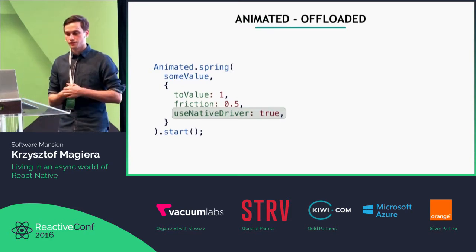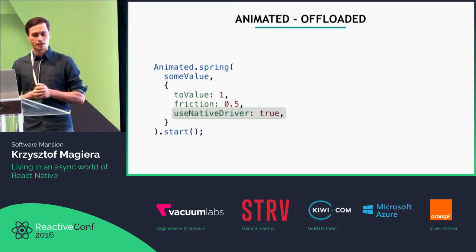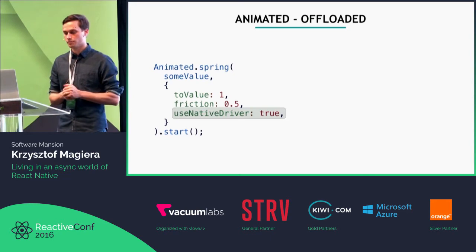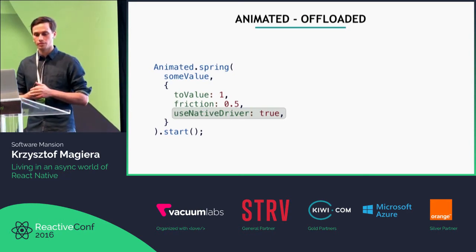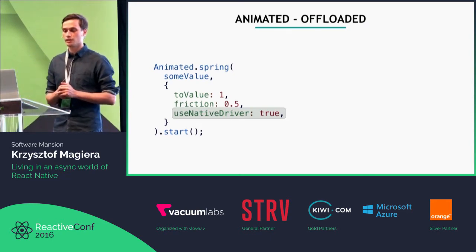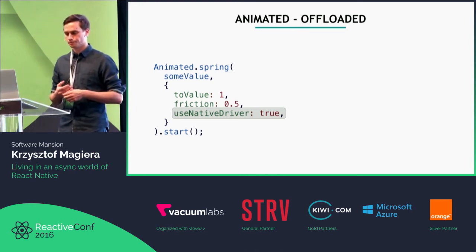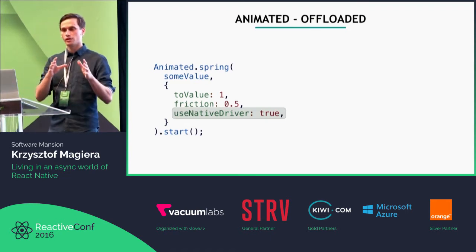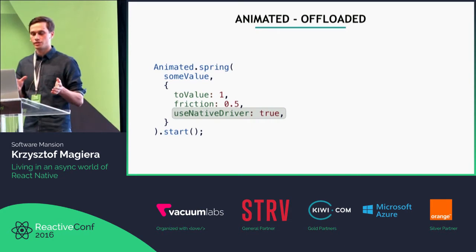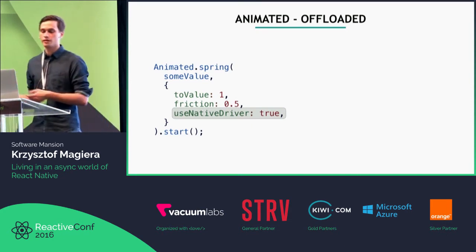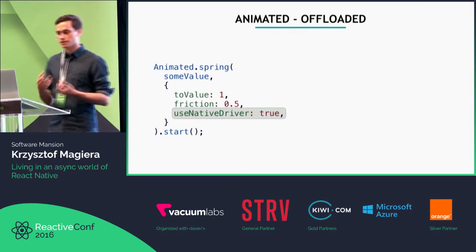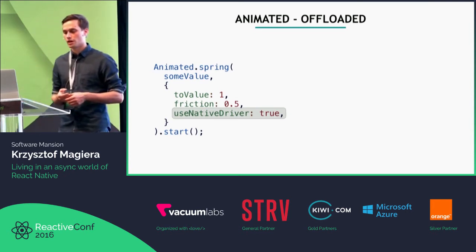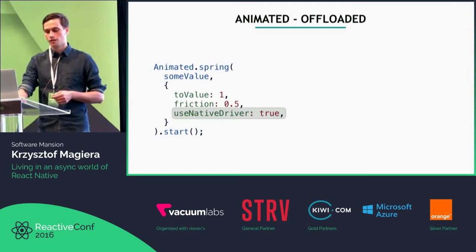One solution for that is the property called useNativeDriver. I've talked about this at React Europe, and I recommend my talk there for the implementation details. Since the Animated API is declarative, we can copy the whole description of how animated nodes interact with each other, move it to the native thread, and then run the animation in the UI thread. There are some limitations, so I recommend watching that talk if you're interested in exactly how it works.